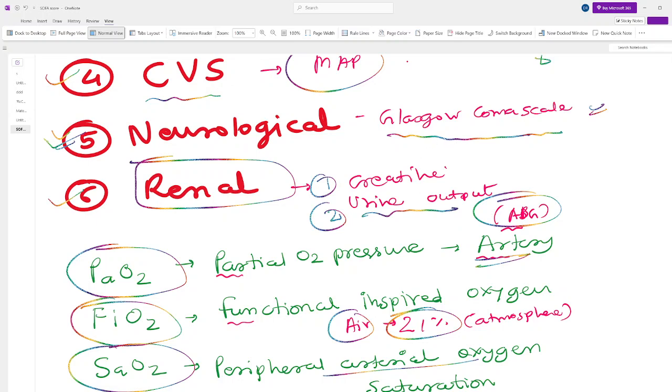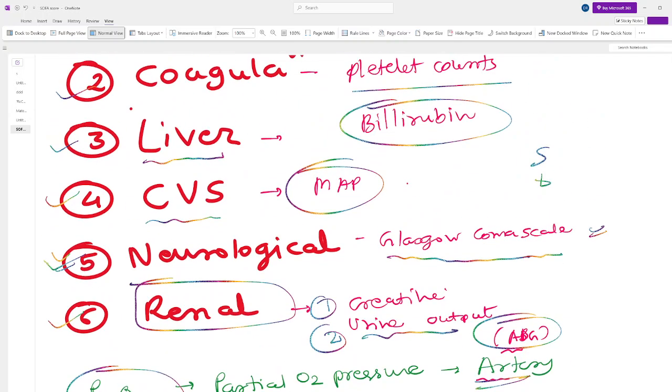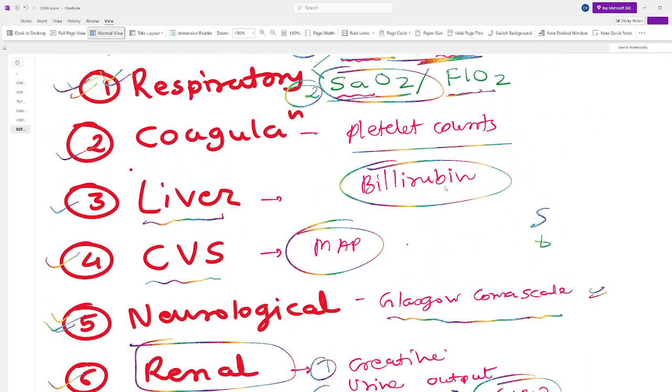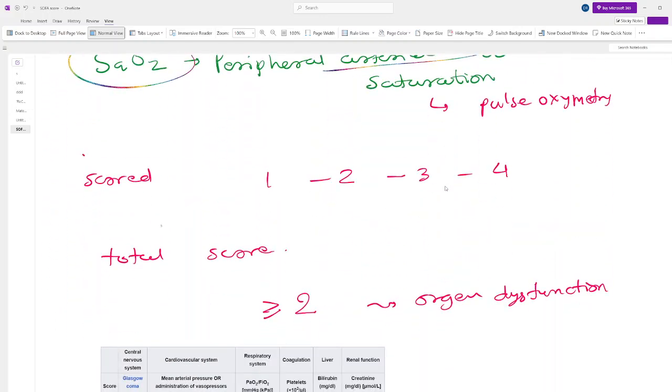You see all of these six systems - the function is measured using very simple parameters. Now let's go with the score.